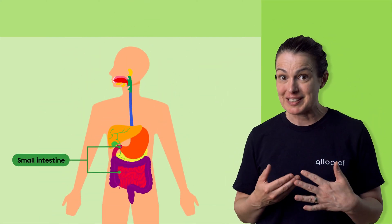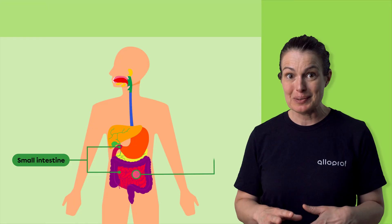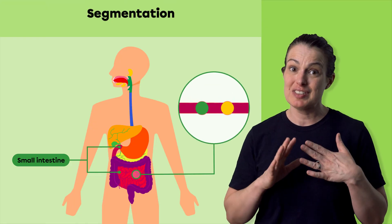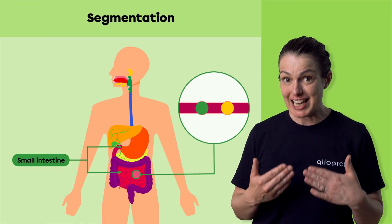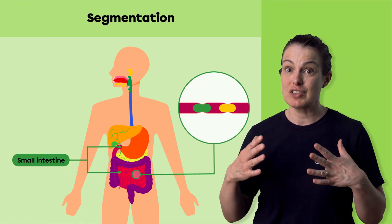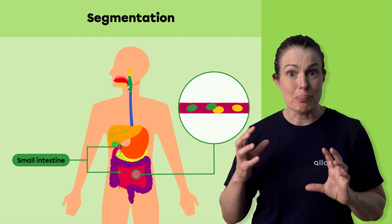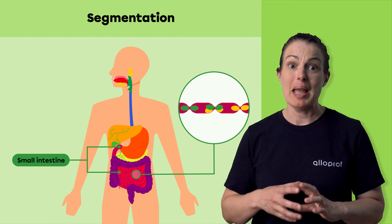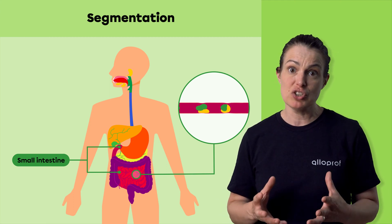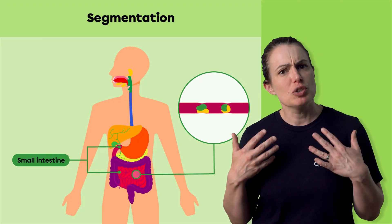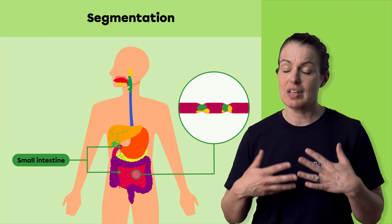Once in the small intestine, the chyme undergoes the process of segmentation. Segmentation is a process of contractions of the small intestine walls that break up the chyme and mix it with other digestive secretions, such as pancreatic juice, intestinal juice, and bile.